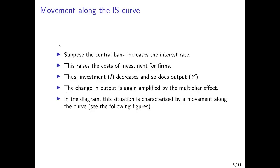To see this, we first consider a movement along the curve according to a change in central bank policy. The central bank increases the interest rate, which raises the costs of investment for firms. So investment I falls, and so does output Y according to the multiplier effect that amplifies the whole process.